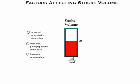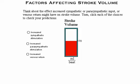The key factor regulating stroke volume is the amount of stretching that occurs to ventricular cardiac muscle prior to contraction. The more cardiac muscle stretches, the more forcefully it contracts, and these stronger contractions increase stroke volume. Think about the effect increased sympathetic or parasympathetic input, or increased venous return, might have on stroke volume, then click each of the choices to check your predictions.